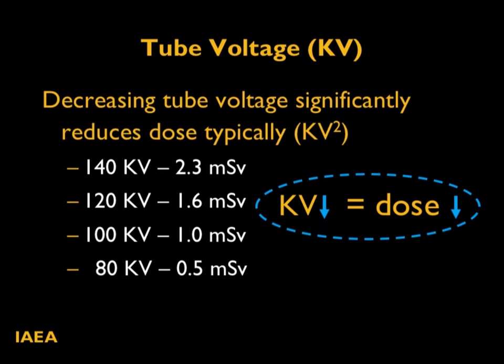This basically explains that decreasing tube voltage significantly reduces radiation dose because radiation dose varies as kV squared. In an earlier broadcast we discussed the tube current impact on patient dose, where patient dose increases linearly with tube current. Here, however, patient dose changes as kV squared. Therefore, a small change in kV has a larger impact on patient dose. Going from 120 kV to 100 kV results in a large decrease in patient dose. The take-home message is that decreasing kV has a significant impact on reducing radiation dose.